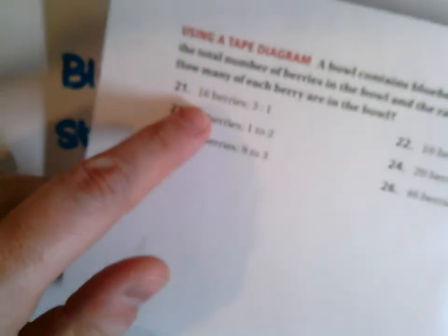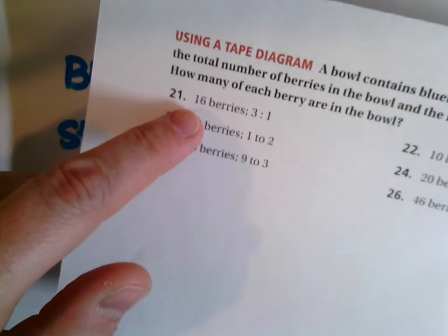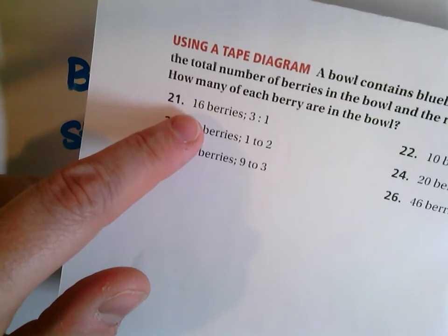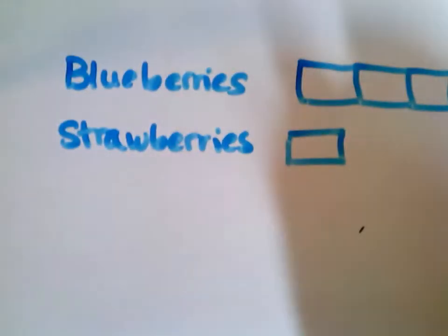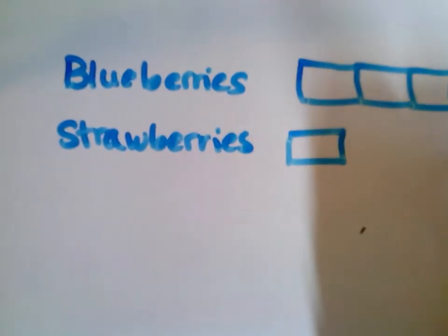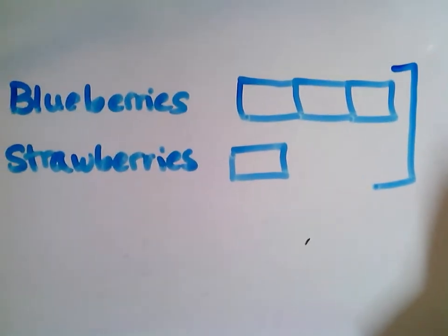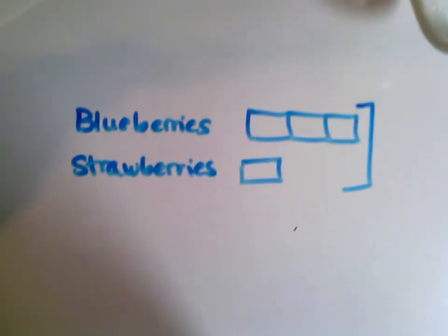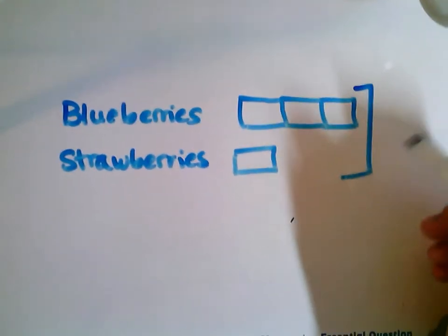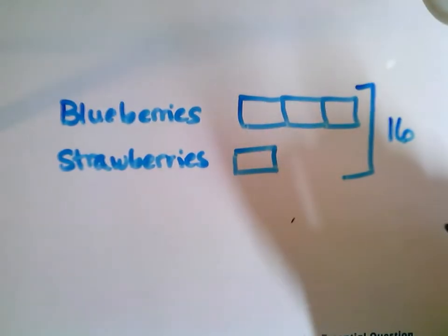Now it also told me in my problem that I have 16 berries total, 16 berries total in my bowl. So I'm going to write that out here. Out here I'm going to say that I have 16 berries total, 16 total.